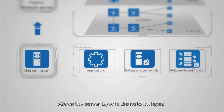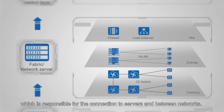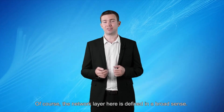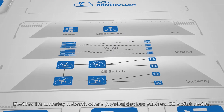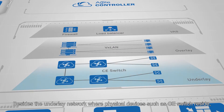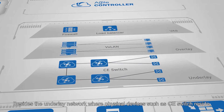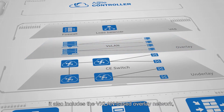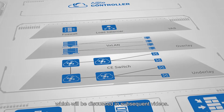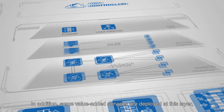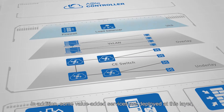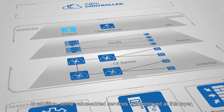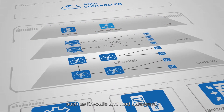Above the server layer is the network layer, which is responsible for the connection to servers and between networks. Of course, the network layer here is defined in a broad sense. Besides the underlay network where physical devices such as CE switches reside, it also includes the VXLAN-based overlay network, which will be discussed in subsequent videos. In addition, some value-added services are deployed at this layer, such as firewalls and load balancers.